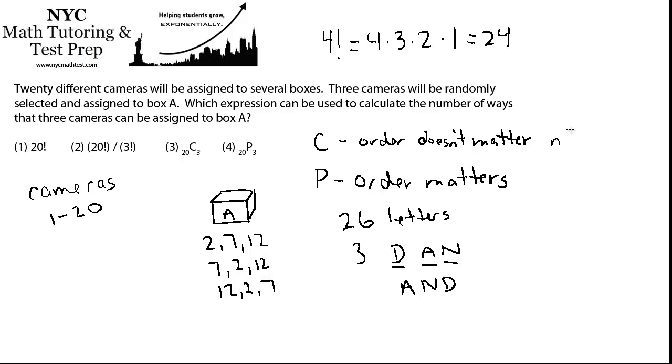C for combination, and X for the number of objects that you're picking from that set. The formula for a combination becomes N factorial over N minus X factorial times X factorial. That's for a combination.